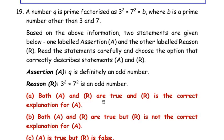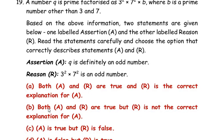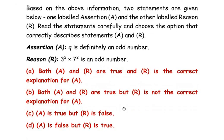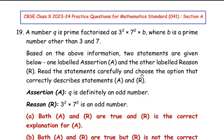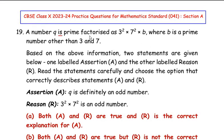We have to see if both are true and R is the correct explanation for the Assertion; or both A and R are true but R is not the correct explanation; or the Assertion is true but the Reason is false; or the Assertion is false but the Reason is true. Let's analyze the question.